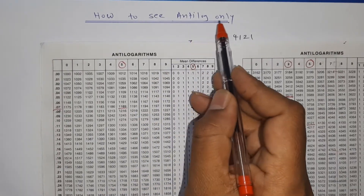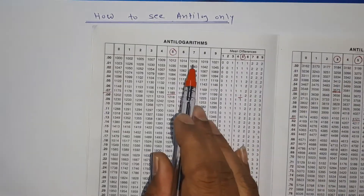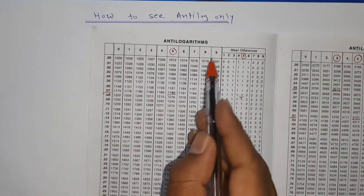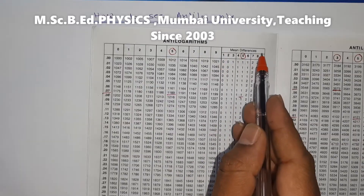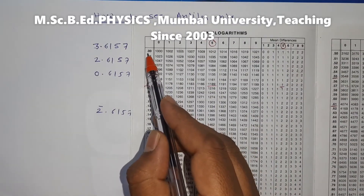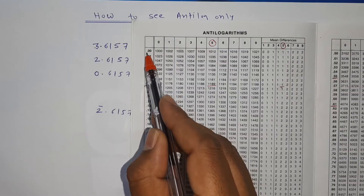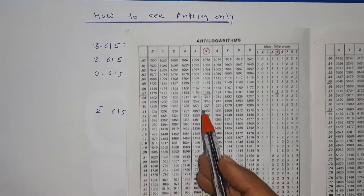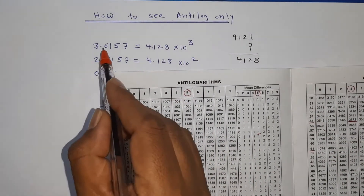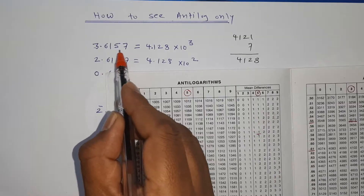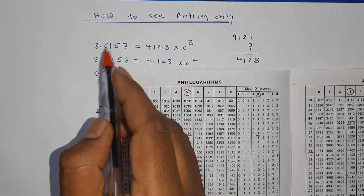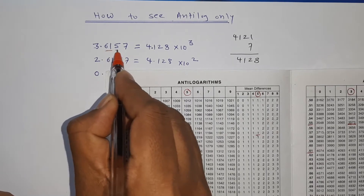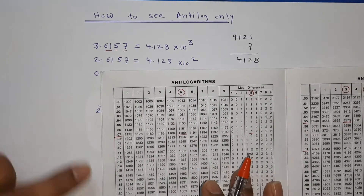To use the antilog table, the first two digits are found in the row column, the third digit is found in the next column, and the fourth digit is looked up in the mean difference column. The antilog table is used for the digits after the decimal point, so you identify four digits after the decimal to look up.